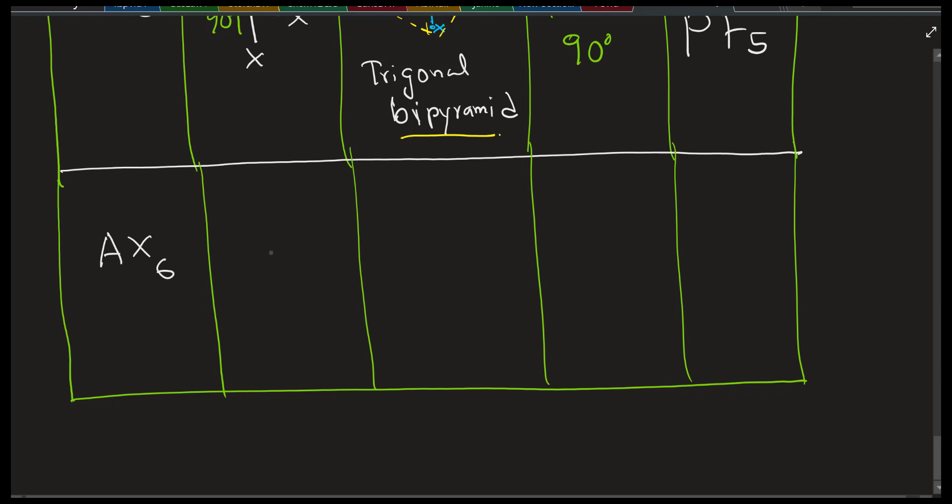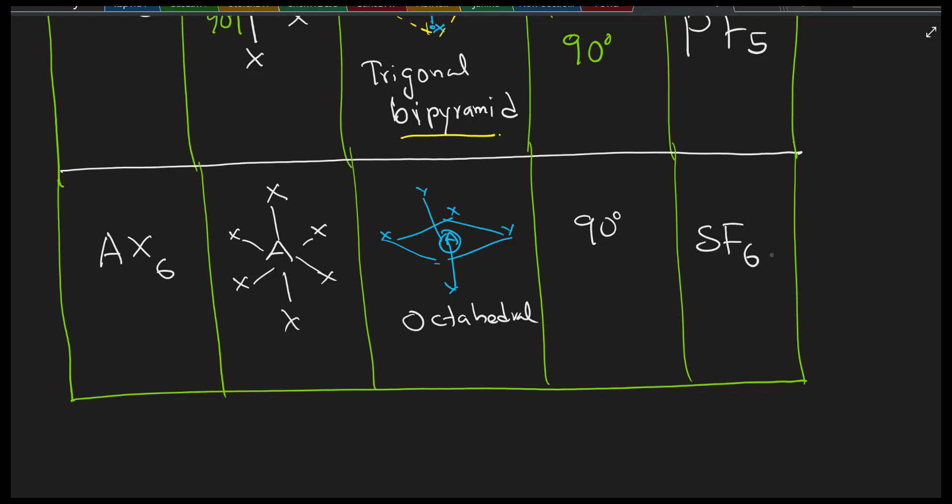The next one is AX6 type. And this one I call the six-legged dog. You have a flat one in the middle, and then one stick up, one stick down. The central atom is A and the flat square in the middle. Now what's the specialty about this molecule has four sides to the top, and four sides to the bottom. Four plus four is octa. That's why it's octahedral. So eight planes, basically. This has everything at 90 degrees. And so many examples for that one too.